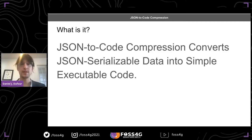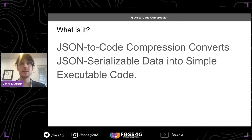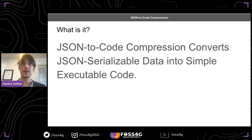Let's break that down a little. JSON serializable just means simple data — whether it's something like a CSV or just text. That sort of data. It doesn't work on compressing classes or sets — not yet anyway.